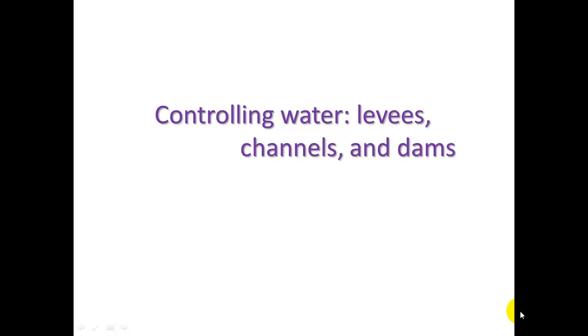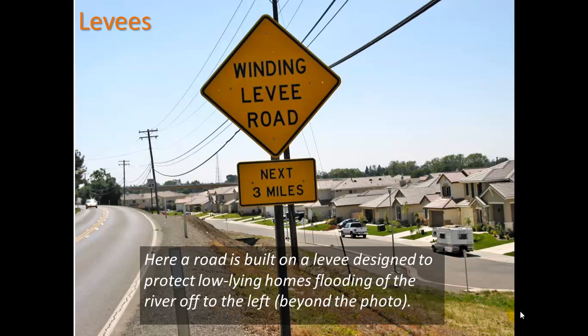In part three we're going to take a look at how we control water using levees, channels, and dams. In some parts of the country or parts of the world you will see a levee, which is just a big mound or a wall built to hold back water that might be in a river or a creek.